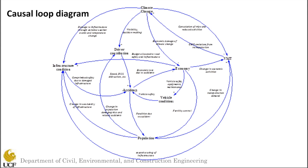The next loop is: population → VMT → climate change → infrastructure condition → accidents → population. As population increases, travel demand and VMT increase, raising GHG emissions and atmospheric temperatures, resulting in more extreme weather events that negatively impact infrastructure condition. This combination of extreme weather and poor infrastructure will increase the accident rate and associated injuries and crashes, directly decreasing the population. Here we have looked at all causal loop diagrams in our model — this is the qualitative aspect of our system dynamics modeling approach.